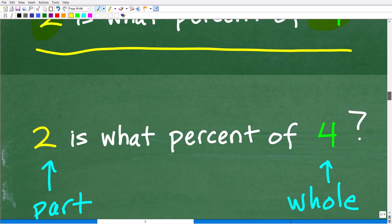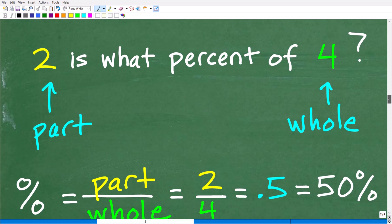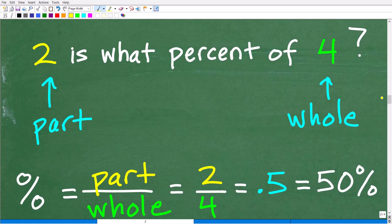2 is what percent of 4? Well hopefully you said, Mr. U2 Math Man, it's 50%. And I would say yes indeed, you are a mathematical genius. That is correct. It is 50%. But let's kind of review what's going on here.